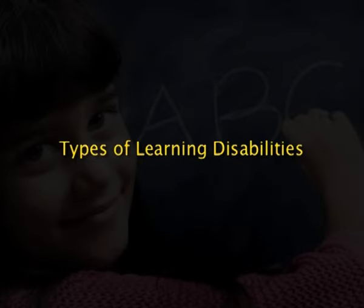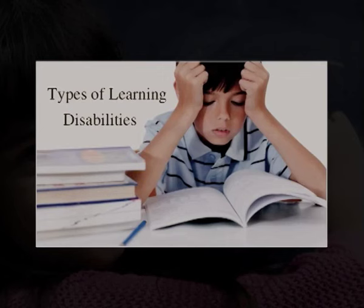Now we are going to talk about the types of learning disabilities. We have understood what learning disability is — its definition, its characteristics — and now it is very important to know the types, because children may show difficulty in only one aspect of learning: reading, writing, or mathematics. So we need to understand how many types of learning disabilities there are.